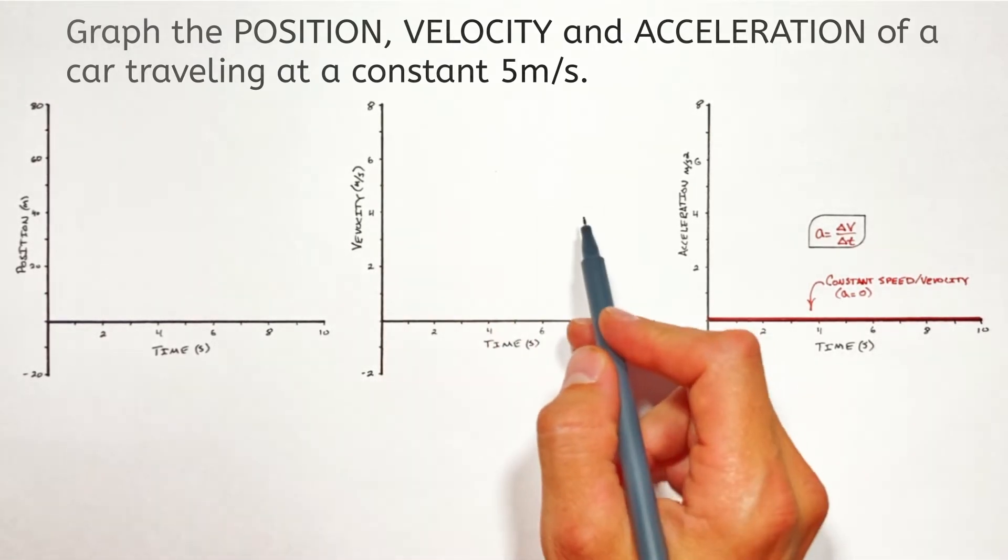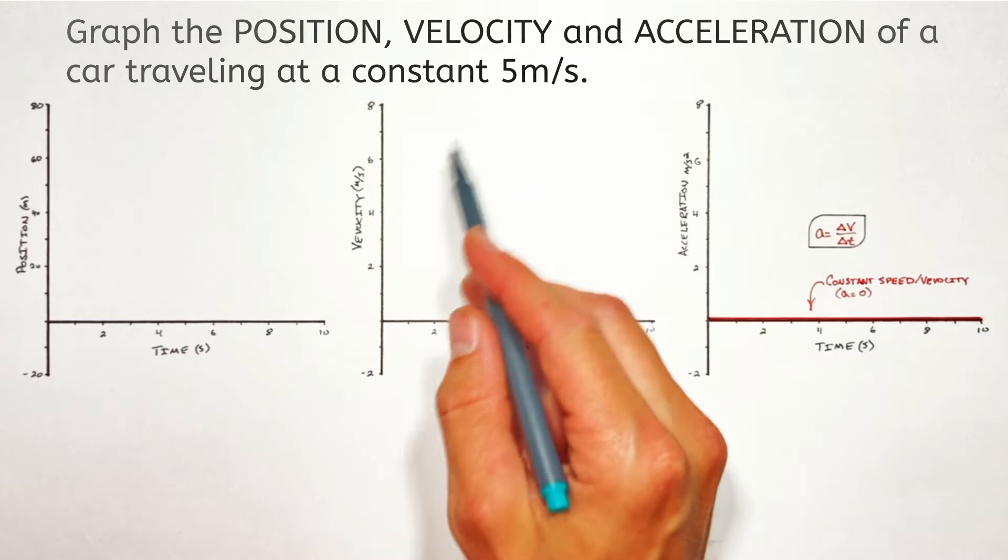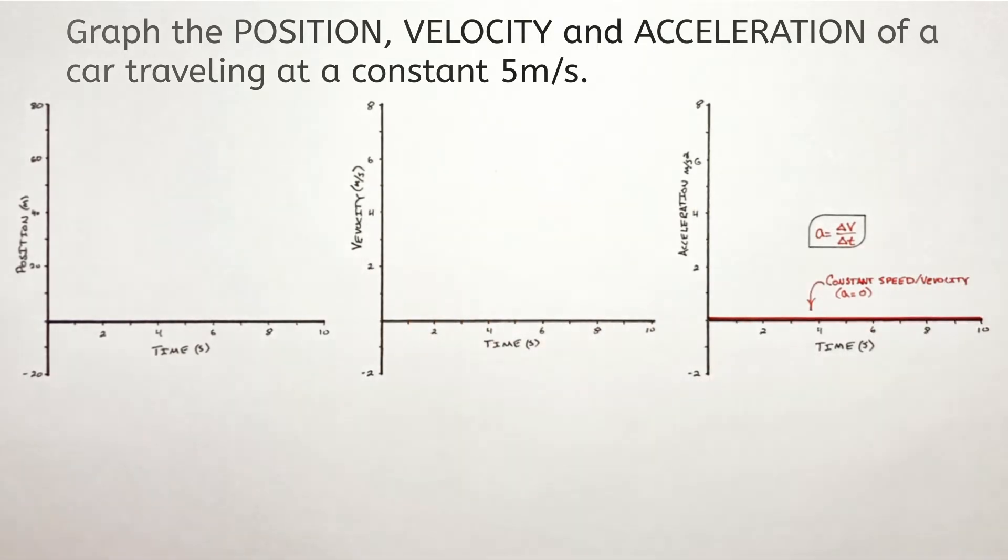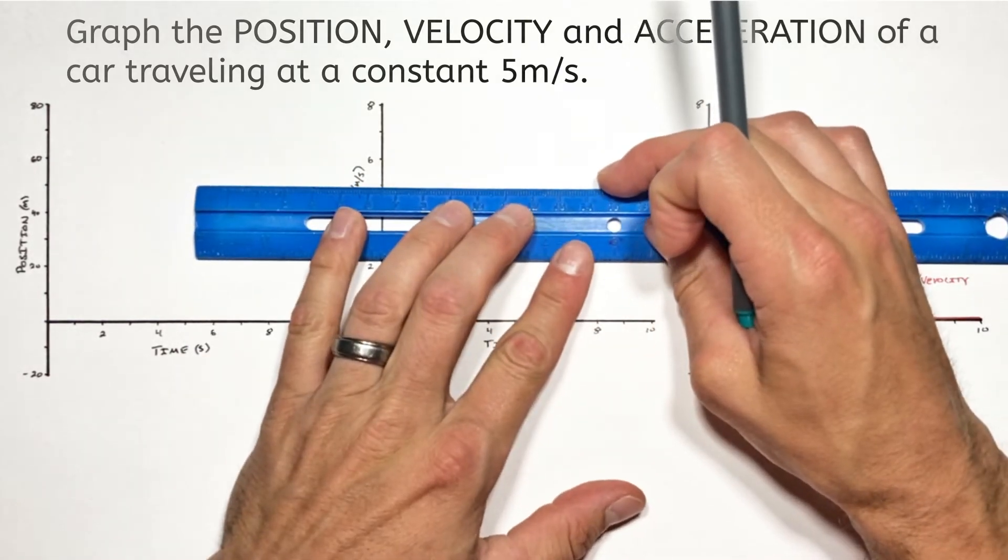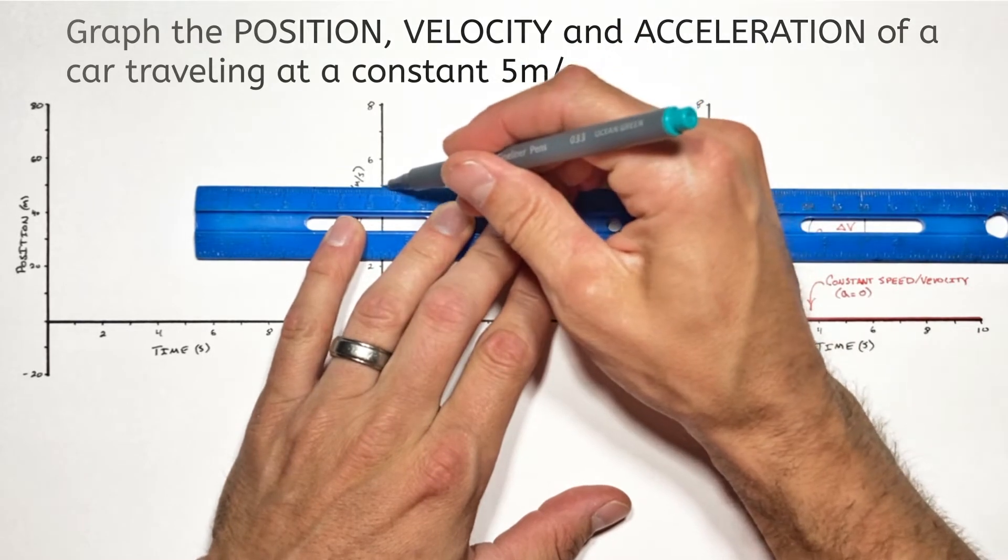Now moving on to velocity, the car is moving at a constant five meters per second. So on our graph, we're going to see a horizontal line with a vertical value of five.